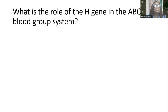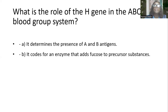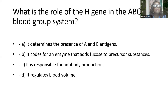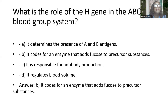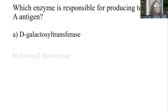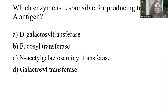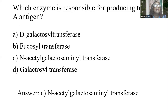What is the role of the H gene in the ABO blood group system? A) It determines the presence of A and B antigens. B) It codes for an enzyme that adds fucose to the precursor substance. C) It is responsible for antibody production. D) It regulates blood flow. The answer is B: it codes for an enzyme that adds fucose to the precursor substance. Which enzyme is responsible for producing the A antigen? A) B-galactosyltransferase. B) Fucosyltransferase. C) N-acetylgalactosaminyltransferase. D) Galactosaminyltransferase. The answer is C: N-acetylgalactosaminyltransferase.